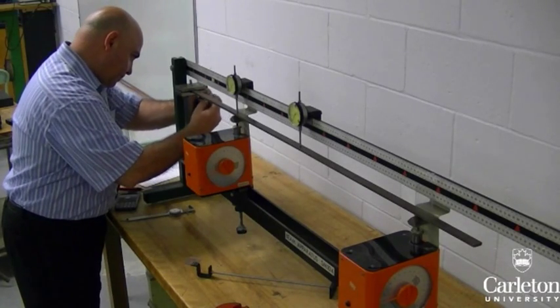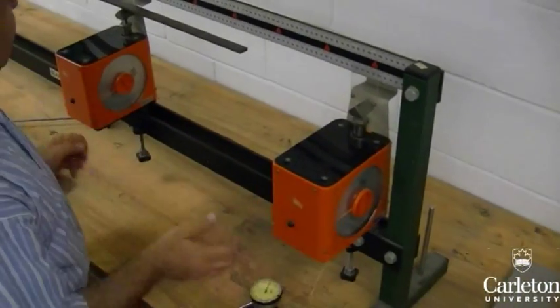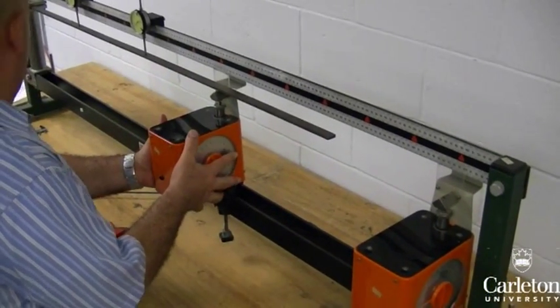However, we cannot measure reaction force at the fixed end. Move the force gauges on the rail so that only one is acting to support the beam at the other end.